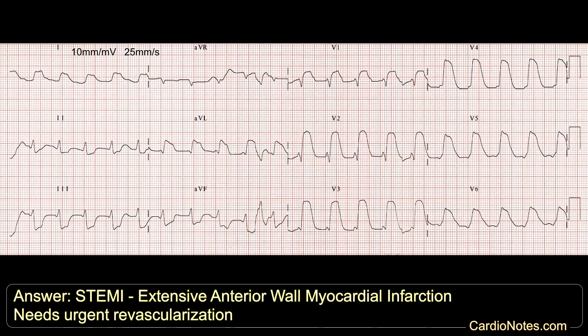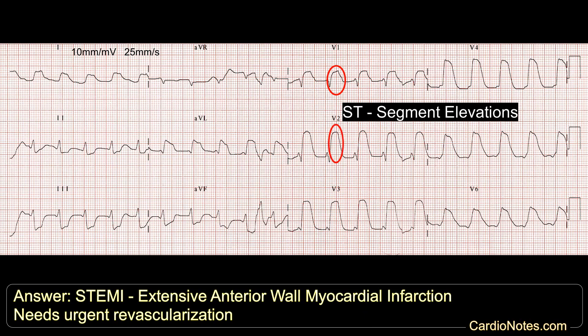That's extensive anterior wall myocardial infarction. Massive ST elevation is present throughout the precordial leads and high lateral leads. It is seen in proximal LAD occlusion and indicates a large territory infarction. He needs urgent revascularization.